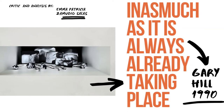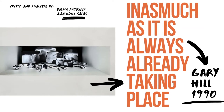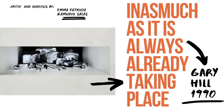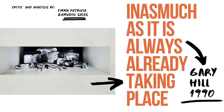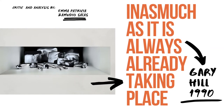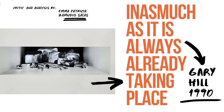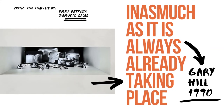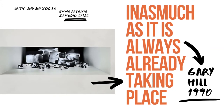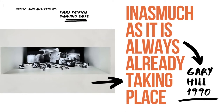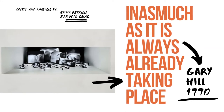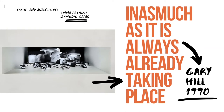Inasmuch as It Is Always Already Taking Place is a piece of art made in 1990 by the artist Gary Hill, and it is part of the collection of the MoMA.